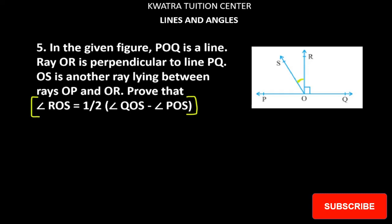Ray OR is perpendicular to line PQ. So this angle is 90 degrees. Which angle is ours? Angle QOR is 90 degrees, and the adjacent angle POR is also 90 degrees. So this is known to us from the question itself.